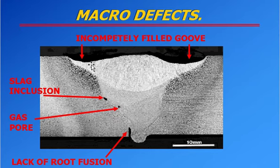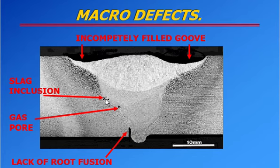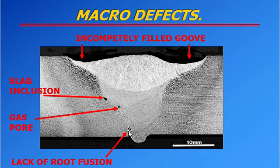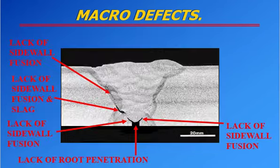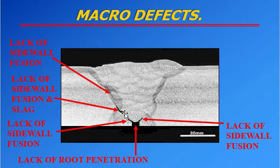You can also find specimens showing incomplete filled groove — not completely filled by weld metal. You may also see slag inclusions, which means they were not chipped properly between each layer of weld metal. Gas ports are visible here. Lack of root fusion is also present. In another area, lack of sidewall fusion is visible along with slag.